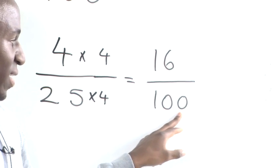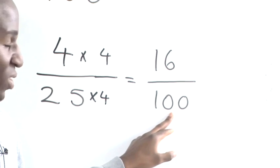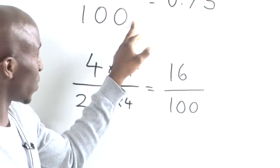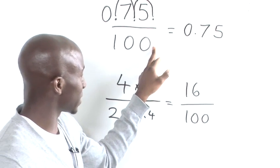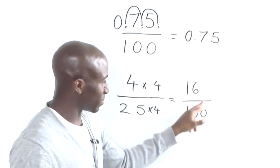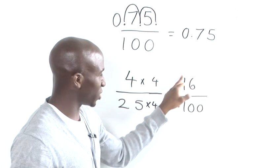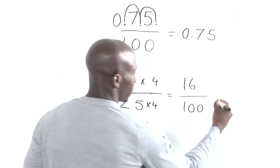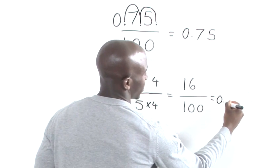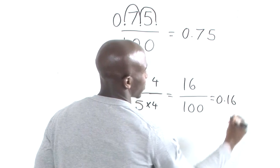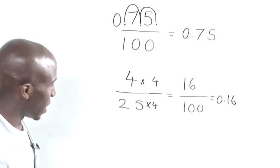As you can see here again, we've got two zeros. So, we're going to do the same thing as what we've done with this particular sum. We're going to jump twice. So, we jump once and then we jump twice. Now, that gives us 0.16 or 0.16.